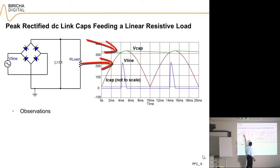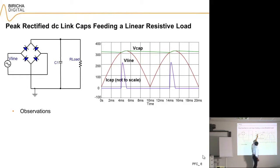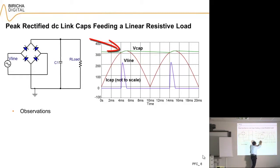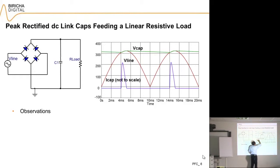As long as the line voltage is lower than the capacitor voltage, no current flows into the capacitor — in fact, the capacitor is actually feeding the load. As it feeds the load, the capacitor voltage falls, until the line voltage catches up and goes above the capacitor voltage. At that point you get massive amounts of current — a huge peak — flowing to recharge the capacitor.